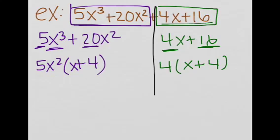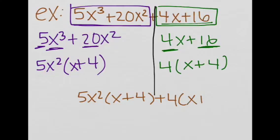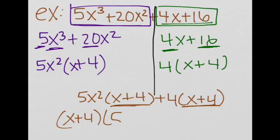Now we're going to combine back these two equations. So we have 5x²(x + 4) + 4(x + 4). Realize they both have an (x + 4). So we can factor out (x + 4), and then we are left with (x + 4)(5x² + 4).